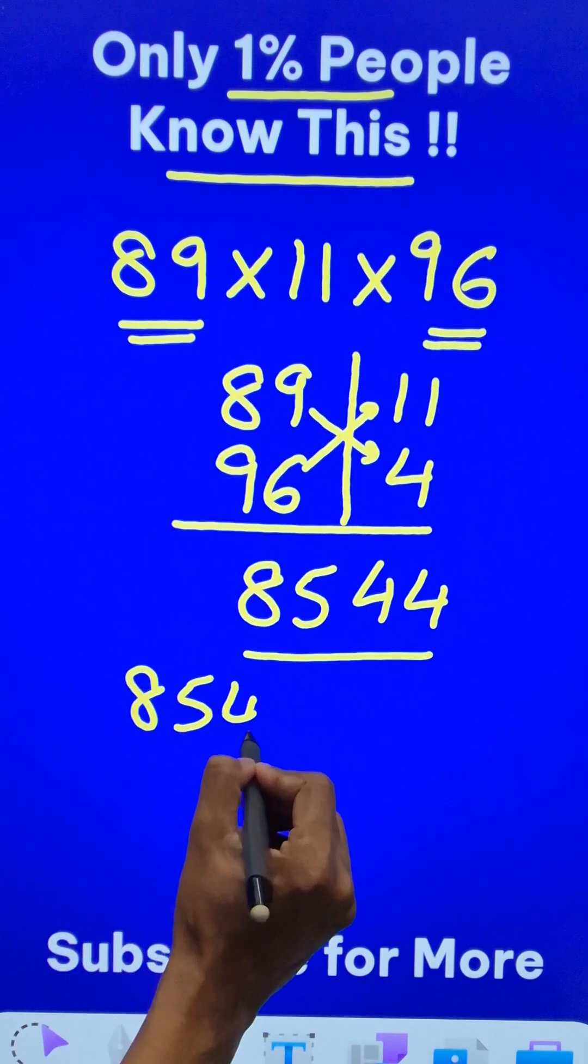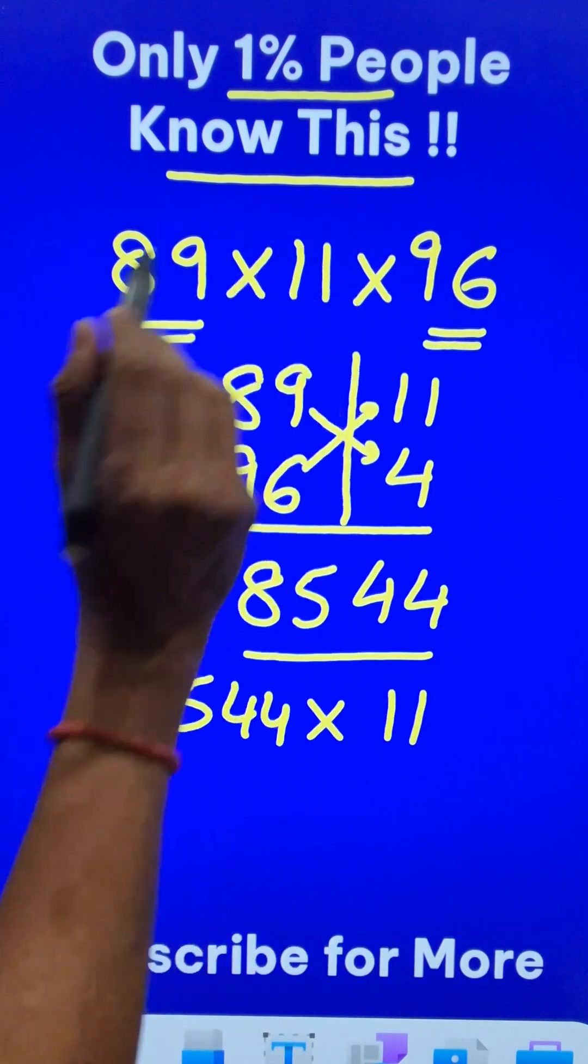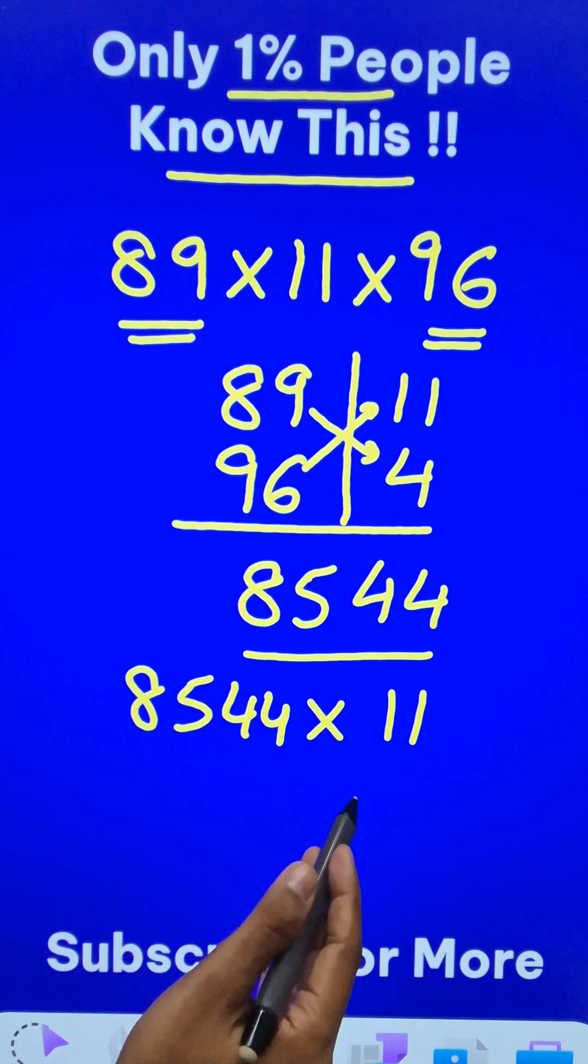Now I need to do 8544 times 11 to get my final answer and multiplication by 11 is really easy.